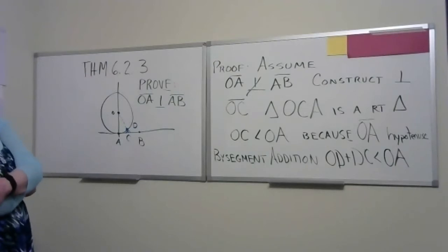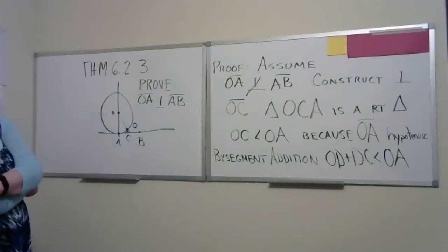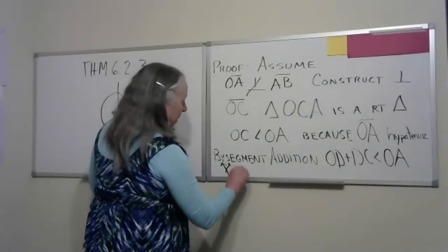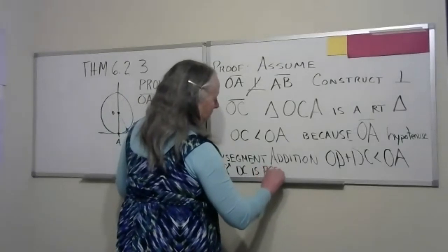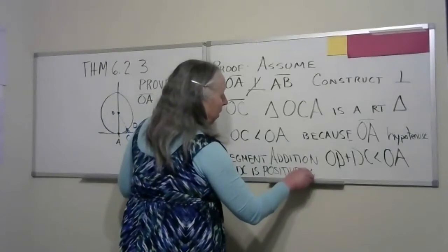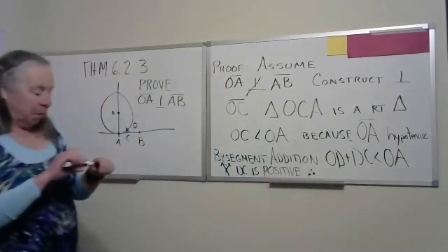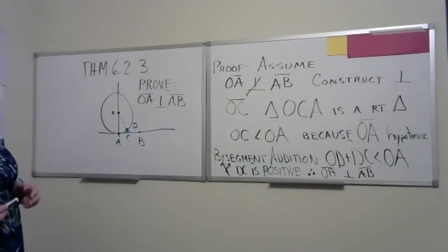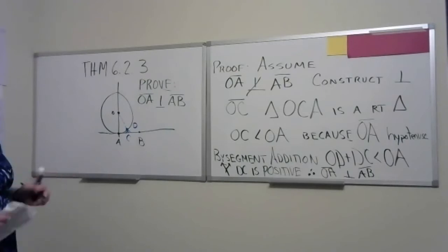What is OD? It's a radius — so we get DC is smaller than zero. Is that a good thing or a bad thing? Really, really bad. This leads us to a contradiction of DC being positive. Therefore, we can conclude OA is indeed perpendicular to AB. So once again we come back to a proof by contradiction. That's why it was important earlier in the semester to look at those proofs, because there's no other way to prove this.